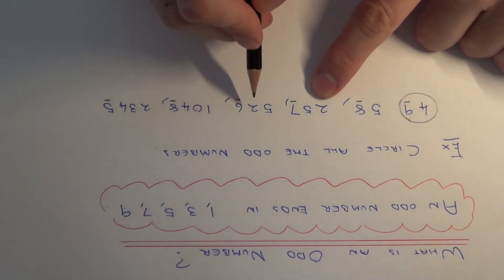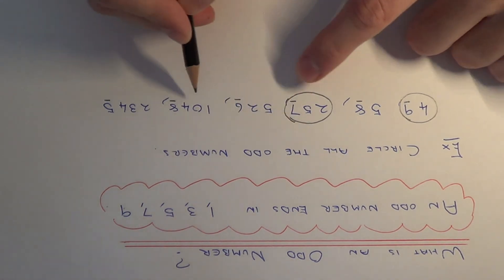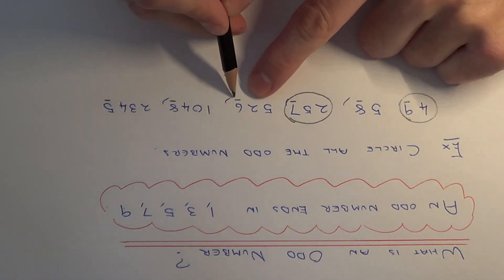The next one is 257, so this one is ending in 7, so this one is definitely odd. 526, this one ends in 6, this one is even.